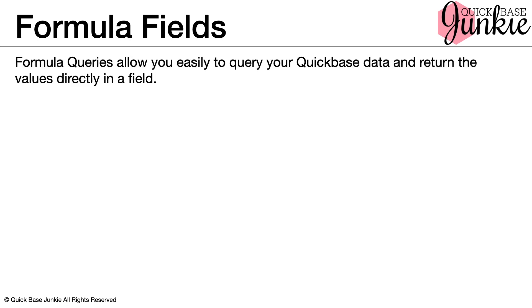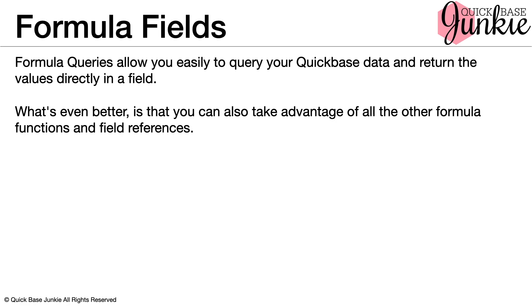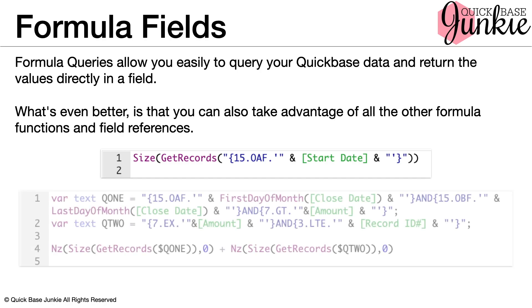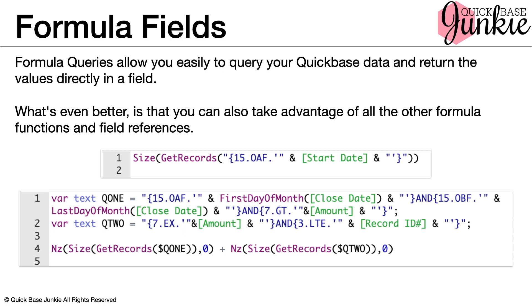Now let's look at a few areas where we can use these queries. The most exciting addition yet has been the formula field. Formula queries allow you to easily query your QuickBase data and return the values directly in a field. What's even better is that you can also take advantage of all the other formula functions and field references. Here's an example of a query in a formula: using get records, we pull a query where field ID 15 is on or after the start date, and then we get the size or count of the records returned in that list that match that query.